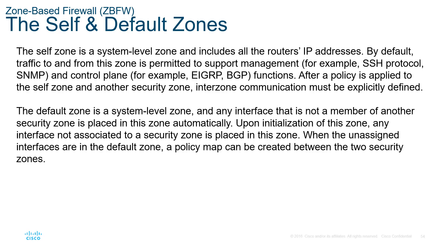After a policy is applied to the self zone, inner-zone communication must be explicitly defined. The default zone is a system-level zone; any interface not a member of another security zone is automatically placed here. Unassigned interfaces are in the default zone. A policy map can be created between the self zone and the default zone.